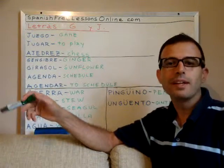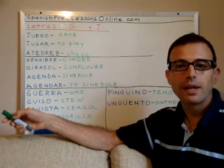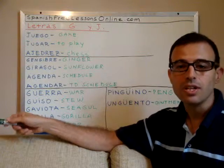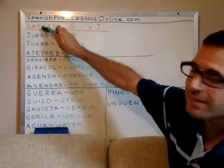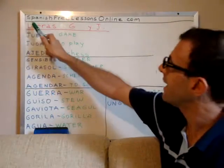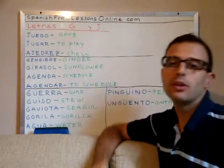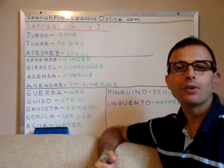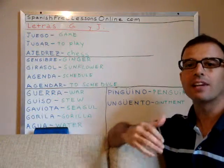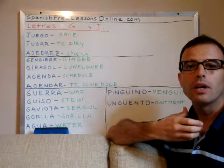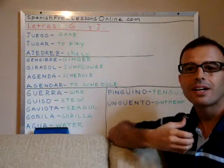Dear students, today I decided to teach some phonetics so we can see how to pronounce in Spanish correctly the J and the G — letras G y J, that is letters G and J. You have to try to pronounce the sound right? Not the smooth sound of the English H. It's more like as if it were scratching from behind the throat, like that.